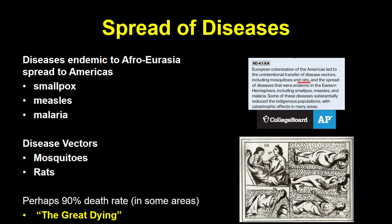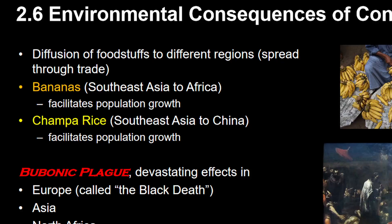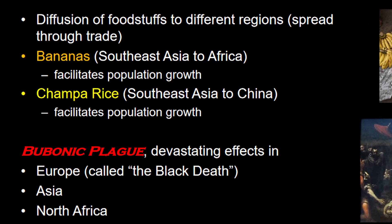Europeans also brought disease vectors like mosquitoes and rats. That reminds me of the bubonic plague — yes, another good comparison with Unit 2.